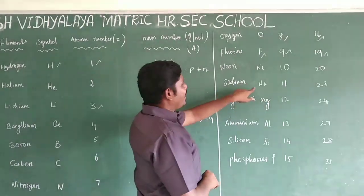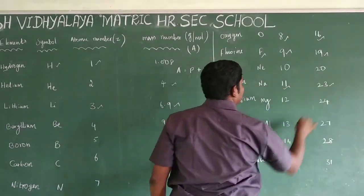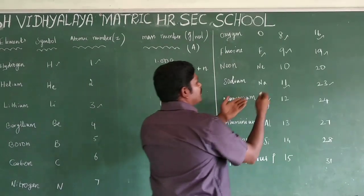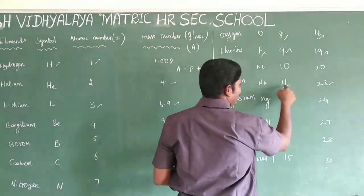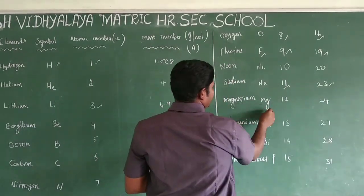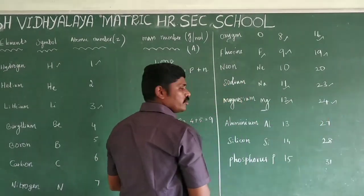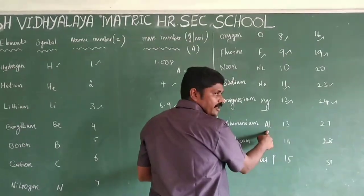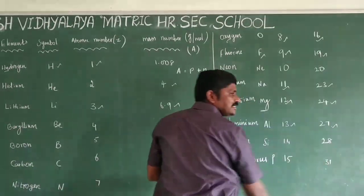Sodium, symbol Na: atomic number 11, mass number 23. The number of protons is 11 and number of neutrons is 12. Magnesium, symbol Mg: atomic number 12, mass number 24. Aluminium, symbol Al: atomic number 13, mass number 27. Silicon, symbol Si: atomic number 14, mass number 28. Phosphorus, symbol P: atomic number 15, mass number 31.